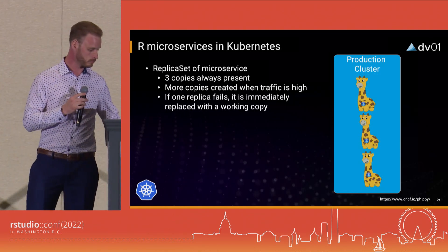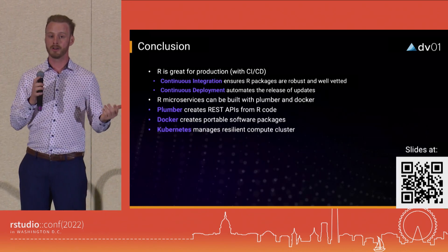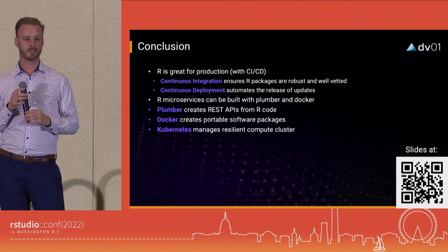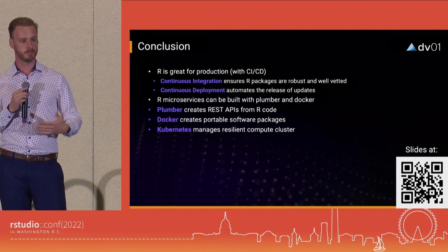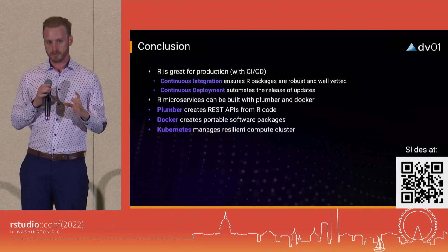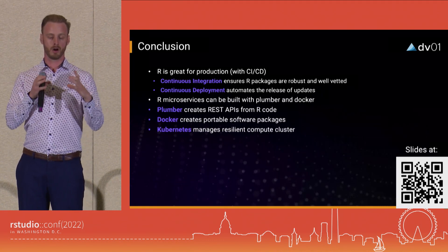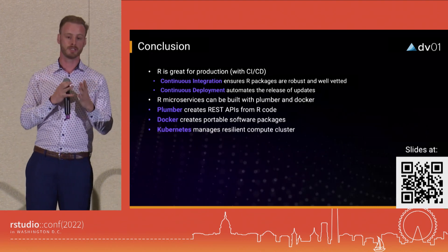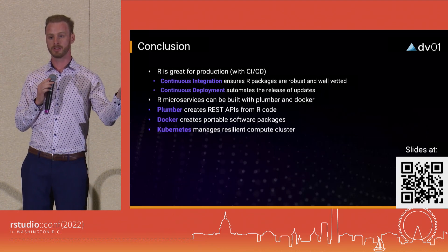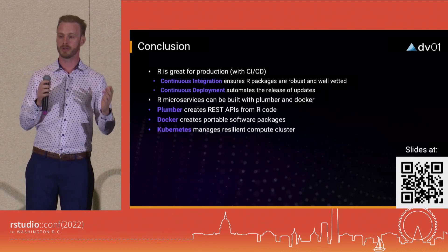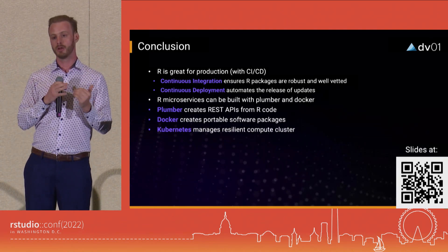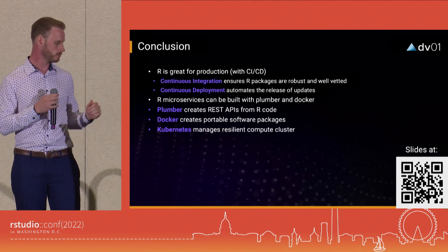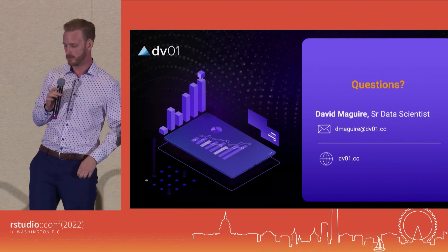In conclusion, R is great for production with proper CI and CD practices. Continuous integration helps you build and vet your R packages. Continuous deployment helps you release updates seamlessly. Plumber packages your R code behind an API where any service with no knowledge of R can get results. Docker creates portable software packages you can run on your laptop or in the cloud. Kubernetes is an orchestration engine that runs your Dockerized application in the cloud, maintains redundancy, and has health checks to ensure your application stays working. Thank you, and I'm happy to take questions.